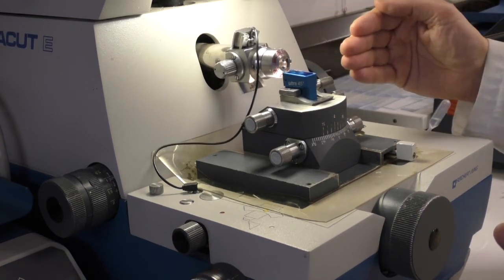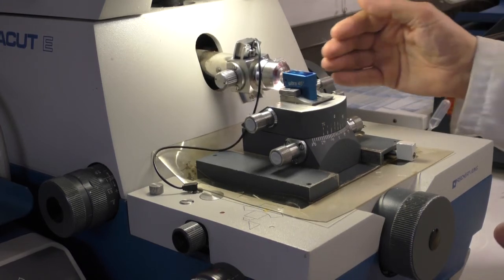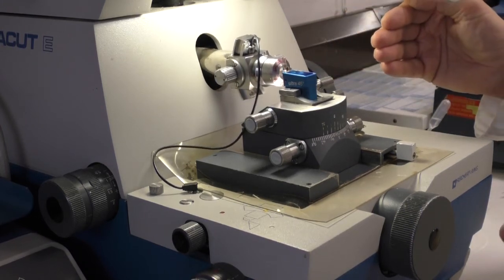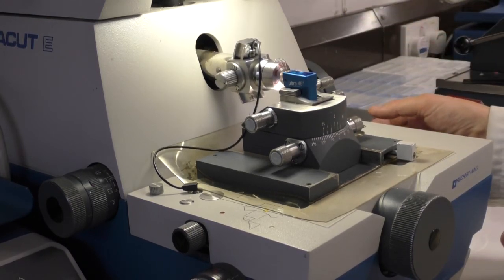It does it again. And each time you cut a section, you take off 70 nanometres, then it advances another 70 nanometres, so that you end up with a string of sections on top of the water in your boat.